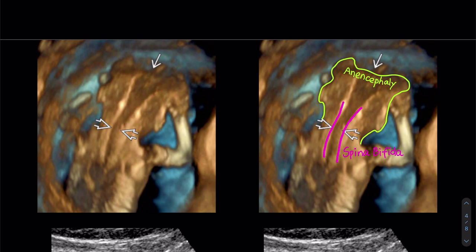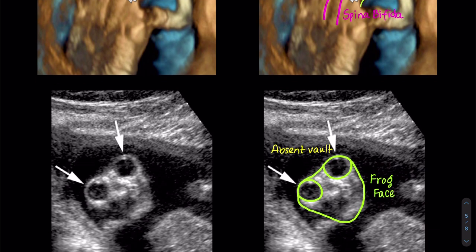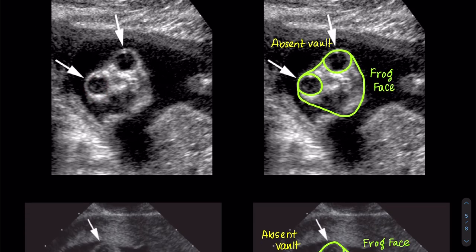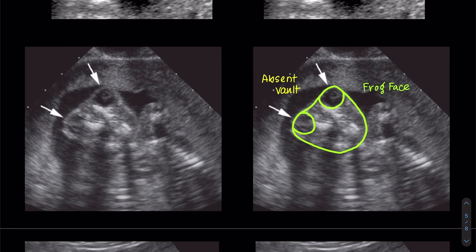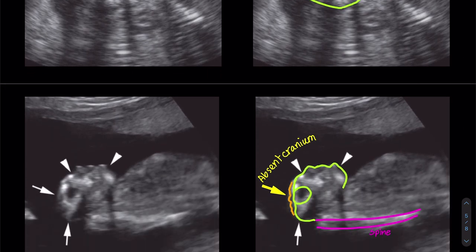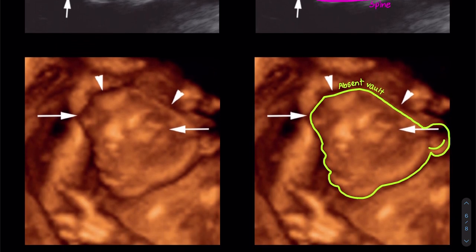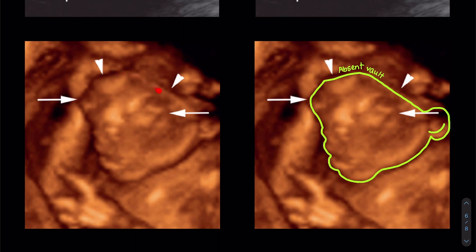Spina bifida, especially cervical, is often seen with anencephaly — both are a result of failure of anterior neuropore closure. A 4D image of the fetal frog-like face demonstrates absence of the forehead and cranium above the orbits. The transvaginal image of the fetal face shows the lower face is normally formed but no forehead is present above the orbits. This sagittal image shows the absence of the fetal cranium and brain above the orbits. Here is another 3D image of an anencephaly fetus with absence of cranium above the orbits and a normal lower face below.